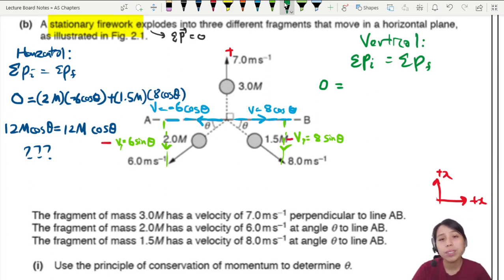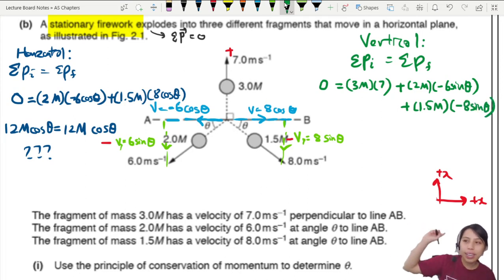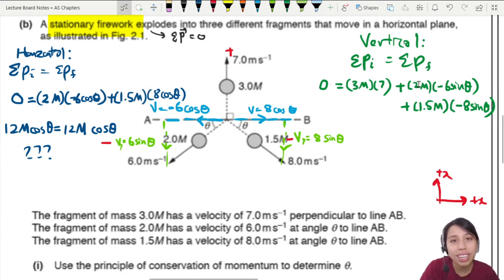So you can write out and say, okay. So we have three M times seven. That's the one going up plus the one going downwards. There's two M times negative six sine theta. And another one, 1.5 M times negative eight sine theta. I think this one we can find answer already. So I'm going to take that equation up there. I'm going to rewrite it down here so that we have more space to write it out. But make sure you know how to even get this equation in the first place. Momentum conservation.